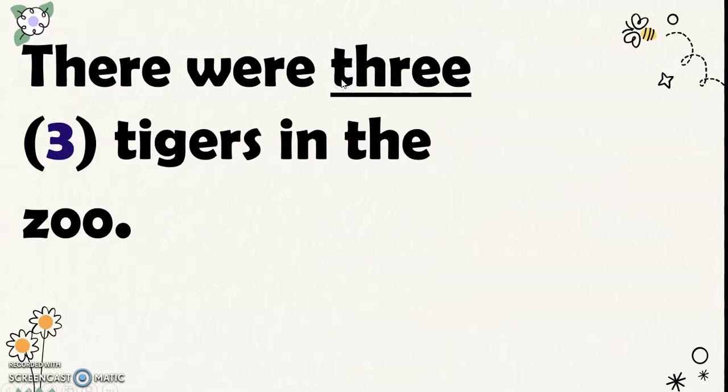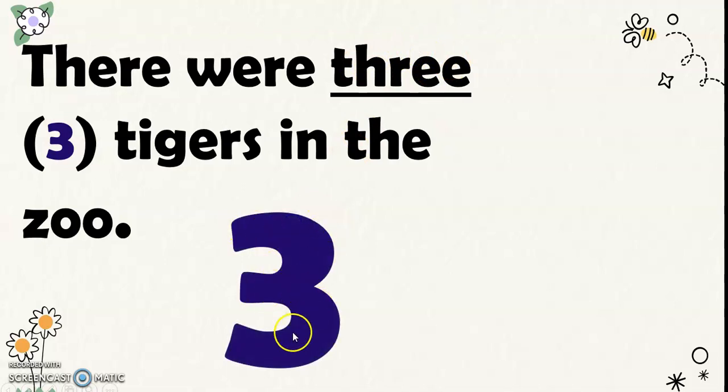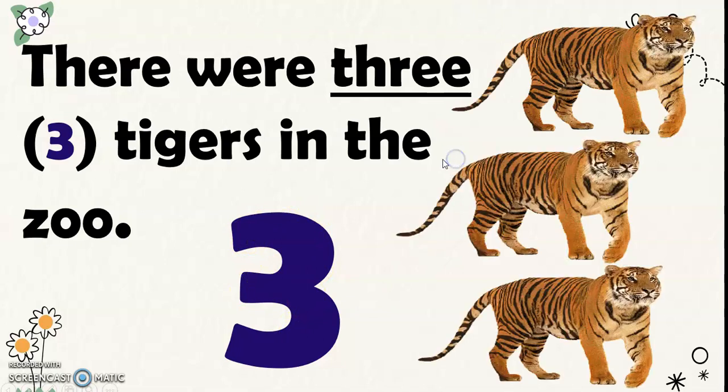Next, there were 3 tigers in the zoo. We write 3 this way in word, and 3 in number symbol. This is how number 3 looks like in number symbol. And these were the 3 tigers in the zoo.